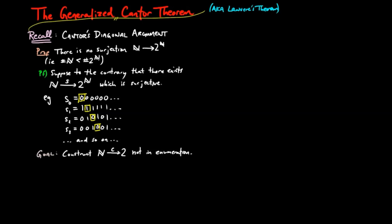To do this, we take the 0th evaluation of s sub 0, the first evaluation of s sub 1, and more generally the i-th evaluation of s sub i. Then we set c to be the enumeration, which at the i-th position differs from the i-th evaluation of s sub i.